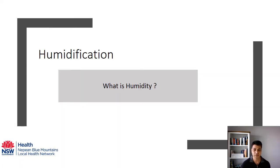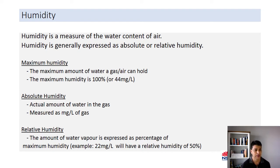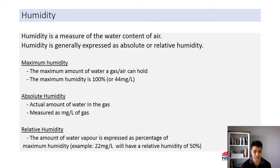So what is humidity? In very simple terms, it is nothing but the measure of water content of air. In other words, humidity is also the amount of moisture held by the air. This quantity of moisture or water held by the air can be expressed in terms of absolute humidity or relative humidity. Absolute humidity is basically the actual amount, whereas relative humidity is expressed in terms of the actual percentage of moisture held by the air.